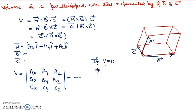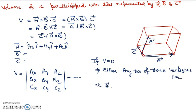If in any calculation the volume comes out to be 0, that means the parallelepiped cannot be formed, because a plane has volume 0. Volume being 0 means either any two of the three vectors are parallel, or all three vectors lie in the same plane. In fact, if we want to check whether three given vectors are coplanar, we solve their scalar triple product a cross b dot c — if the result is 0, it represents that the volume is 0, which means A, B, and C all lie in the same plane.